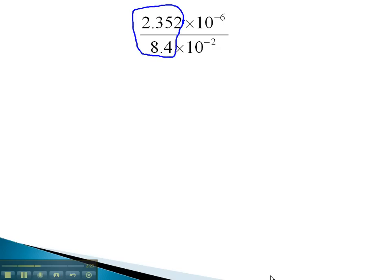we'll focus on the front numbers and divide on the calculator to get 0.28. For the tens, since it's a division problem, we will subtract the exponents. Be very careful with the negatives and subtracting. We're doing negative 6 subtracting negative 2. This will not give us an answer of negative 8. When we add the opposite, we find this is actually negative 4.